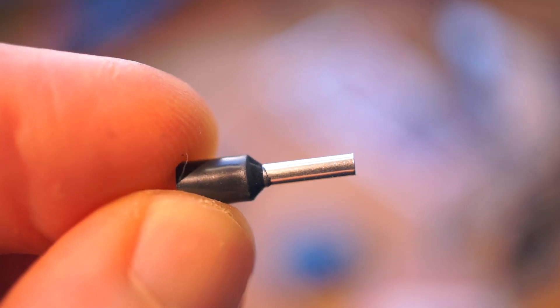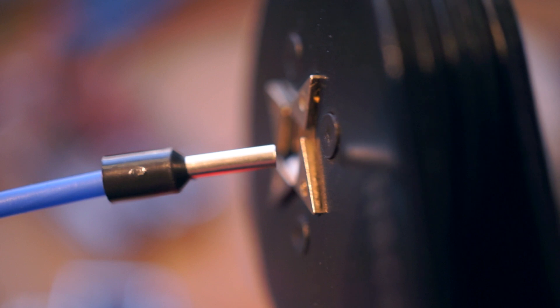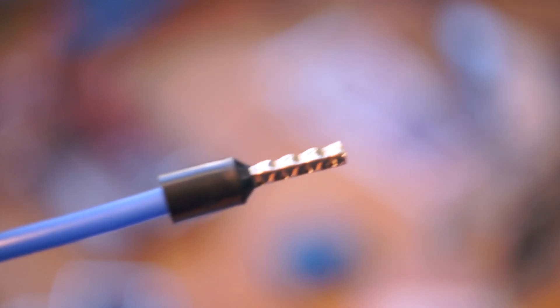This is a ferrule. It's a kind of crimped connector for wires, but instead of putting a spade or a fork or a ring on the end, it creates this uniform, squared off, slightly bumpy lead.